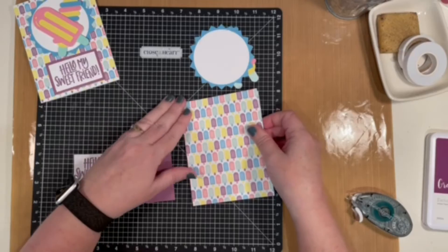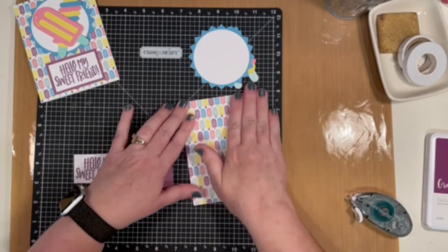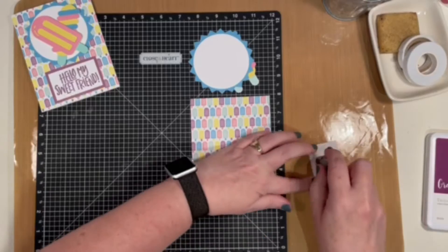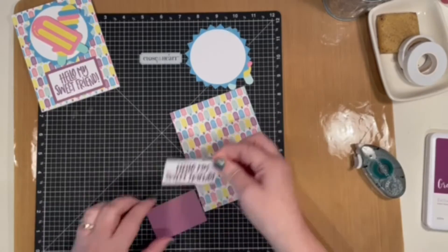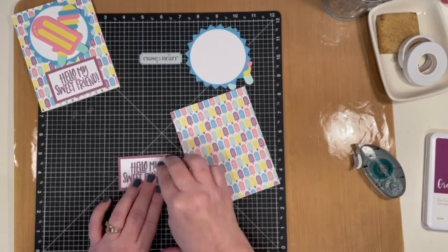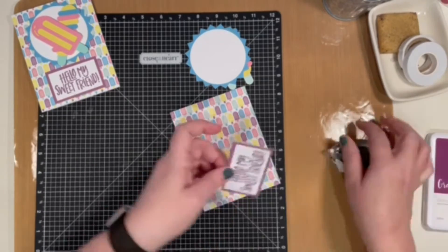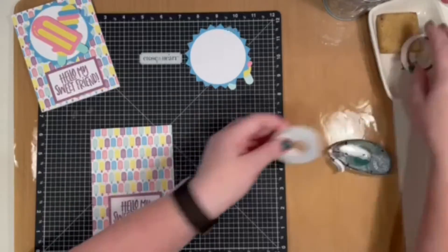Let's get our sentiment all glued together. It's going to go at the bottom of the card, and once we have that in place, we can get our popsicles on there. We're going to use mounting tape.